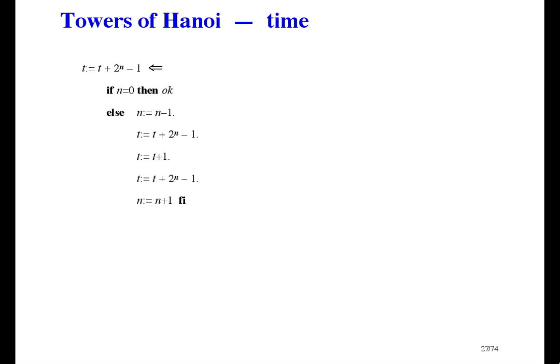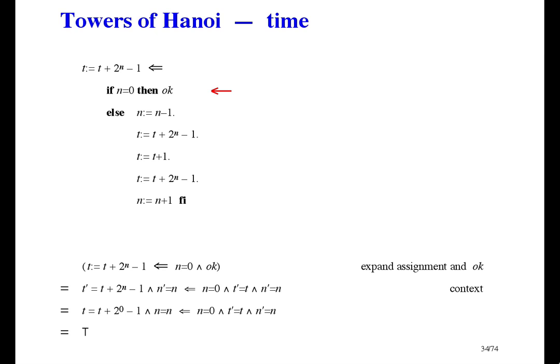I've replaced MovePile with the time it takes. Both the main specification and the two recursive calls. For the measure of time, I'm not using real time and I'm not using recursive time. I'm counting disc movements. So, I've replaced MoveDisc with t gets t plus one. To prove this refinement, there are two cases. Here's the first case. We have to expand the assignment and okay. And, then we can use context to make some substitutions in the consequent. And, since two to the power of zero is one, the consequent simplifies to true. And, so the whole thing is true.